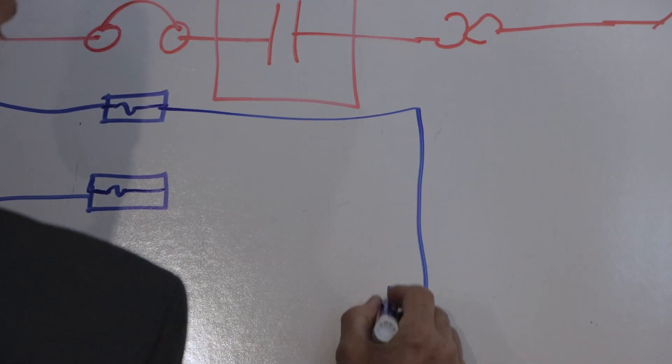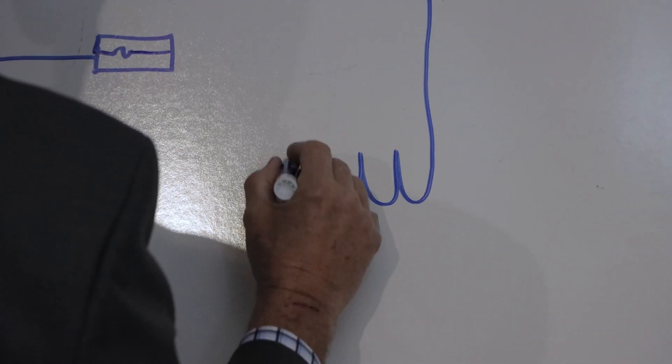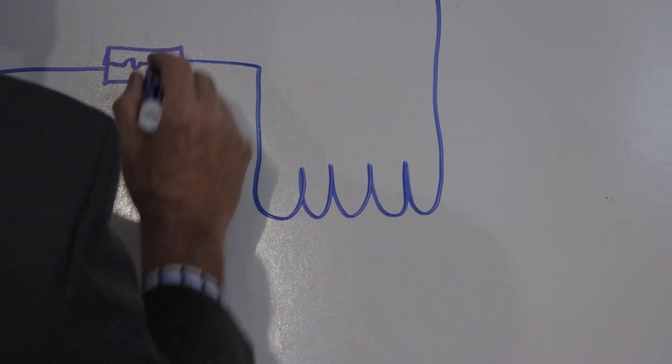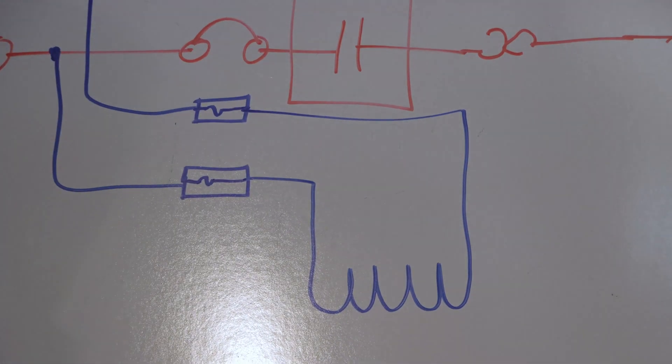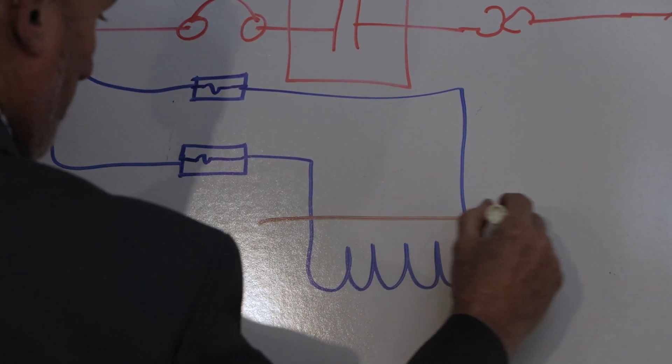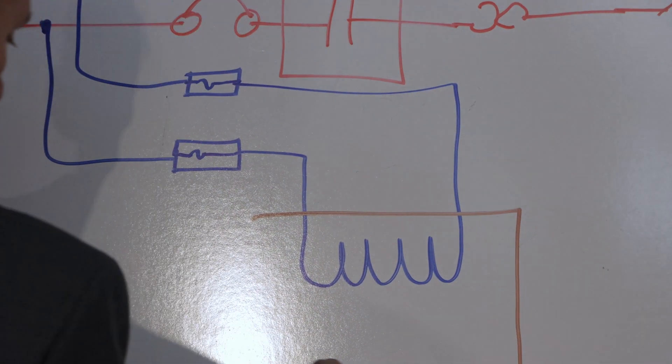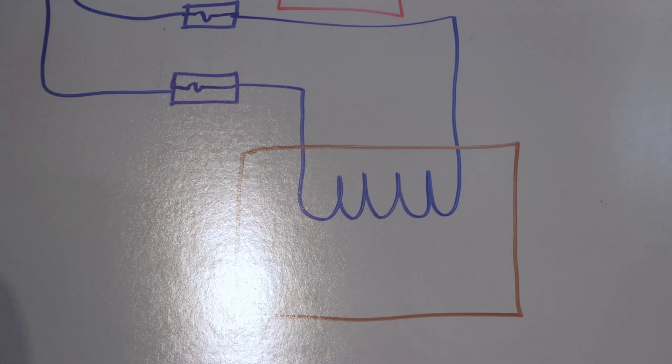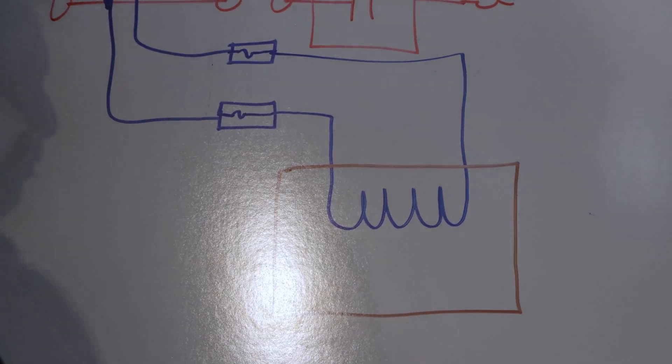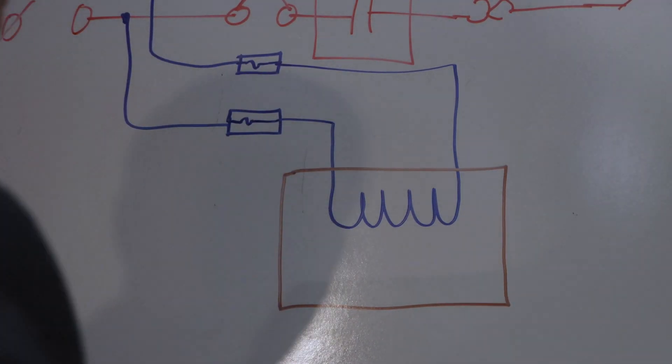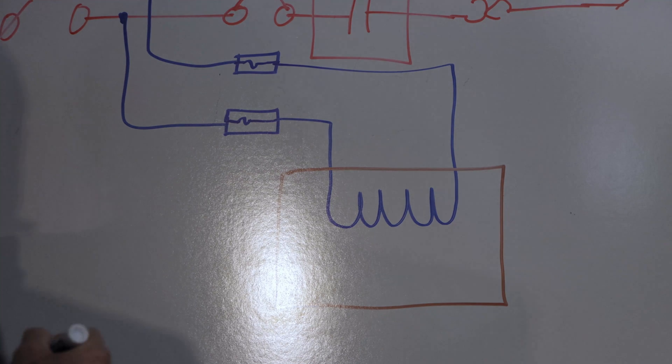From here, this is diagrammatic, of course. I have the primary of my control transformer. Control transformer can be as small as 20 volt amps. If you've got a lot of motors, you can have a 1,000 volt amp transformer. In other words, a kilowatt.